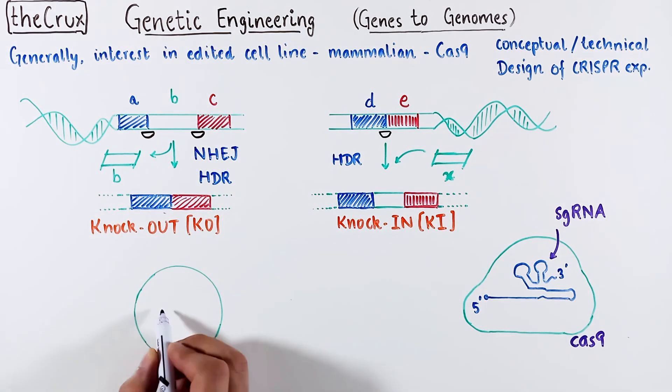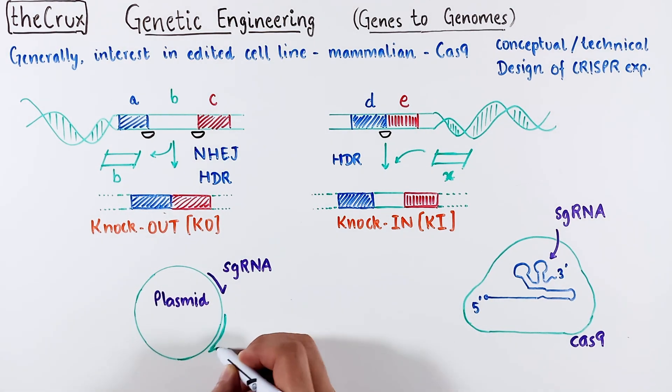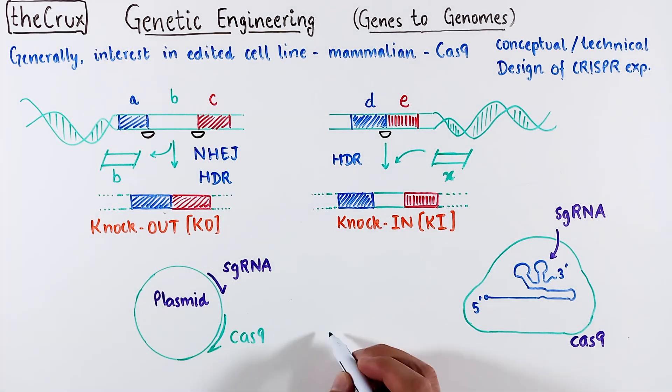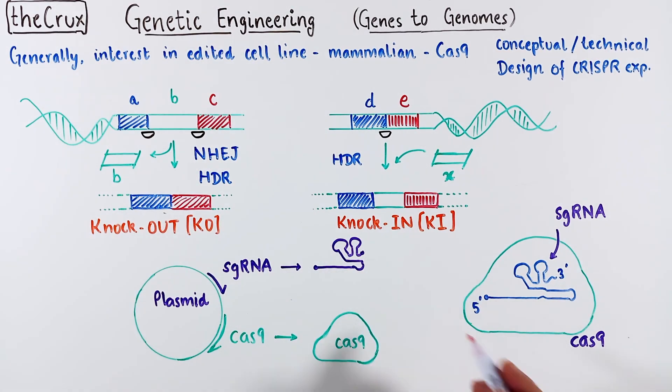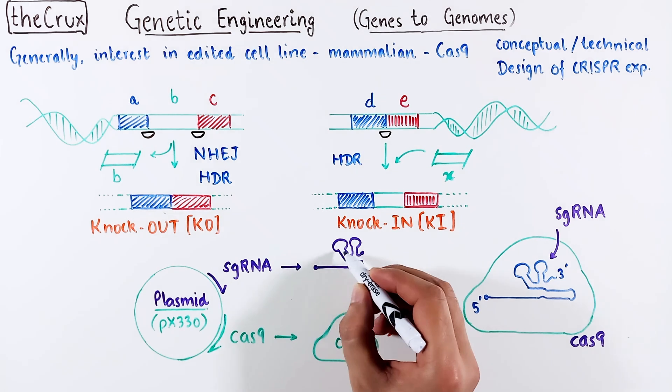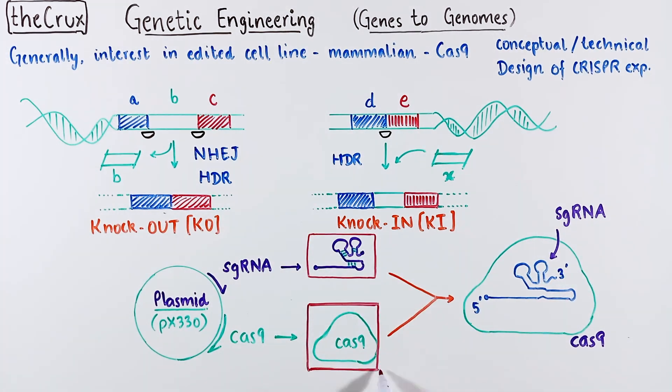For a CRISPR experiment, the Cas9 and sgRNA can be provided by a plasmid that encodes both these features. Inside the cell, the plasmid is used as a template to make the RNA and the protein that self-assemble to form the active nuclease. One example of this plasmid is PX330. In contrast to plasmid, you can also just literally buy sgRNA and Cas9 protein, assemble the RNP in vitro, and directly deliver the RNP to the cells.